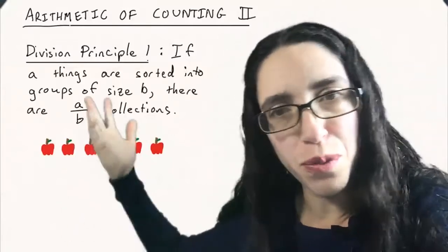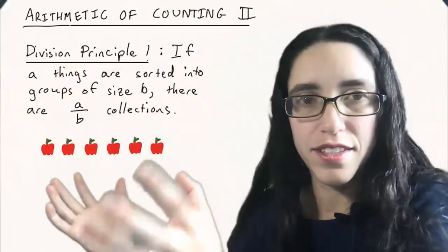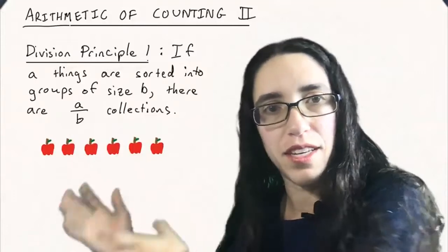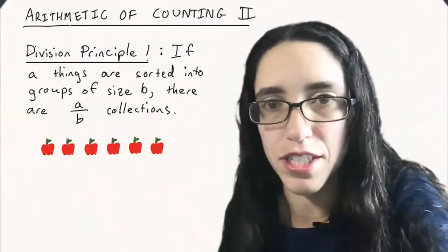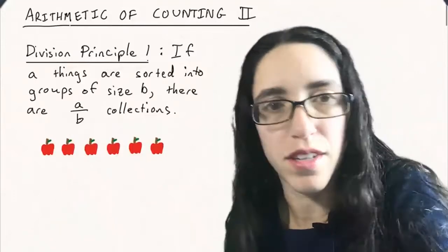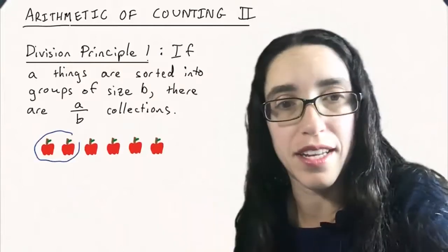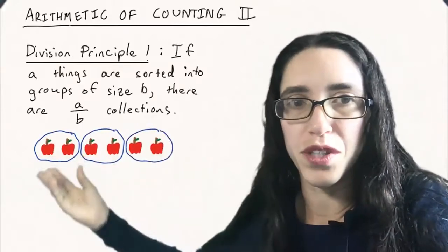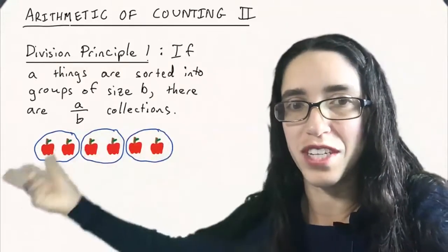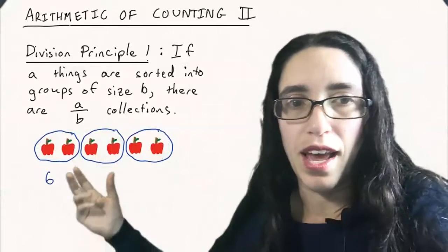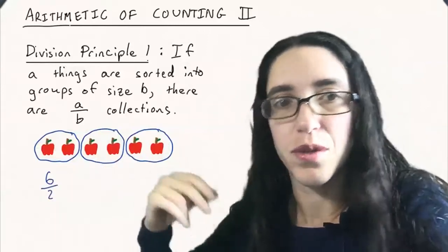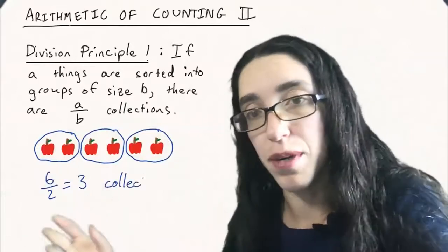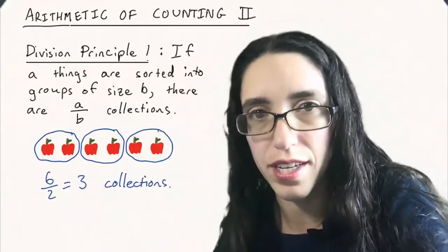So the first way of stating the division principle is if a things are sorted into groups of size b, then there are a over b groups, a over b different collections that we made. This is a very simple principle that comes in handy a lot. Let's look at this simple example of six apples and you sort them into groups of size two. How many groups did we sort them into? Well you can see that it's three, but we could have calculated this as six divided by two.